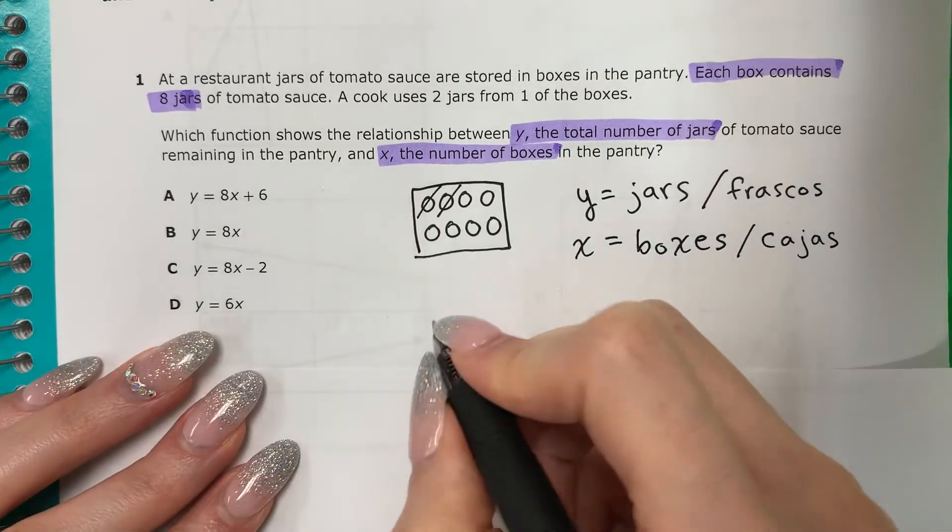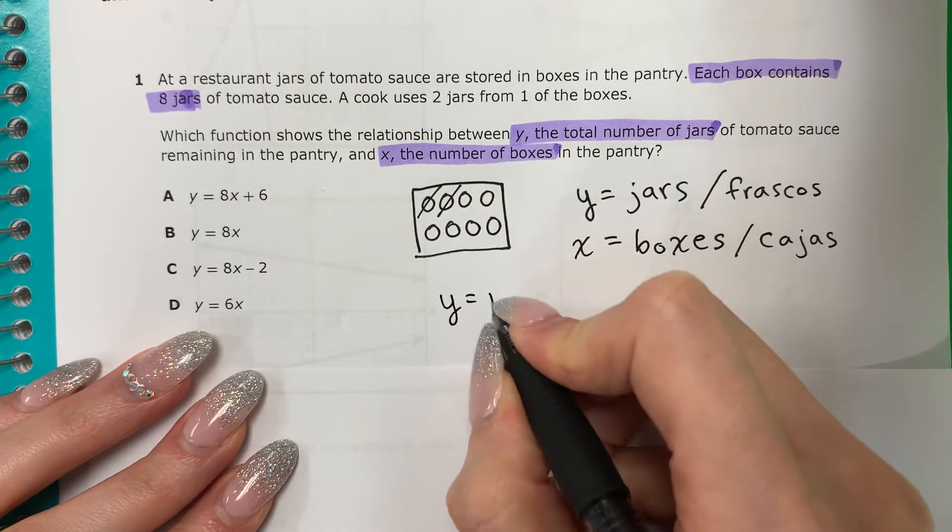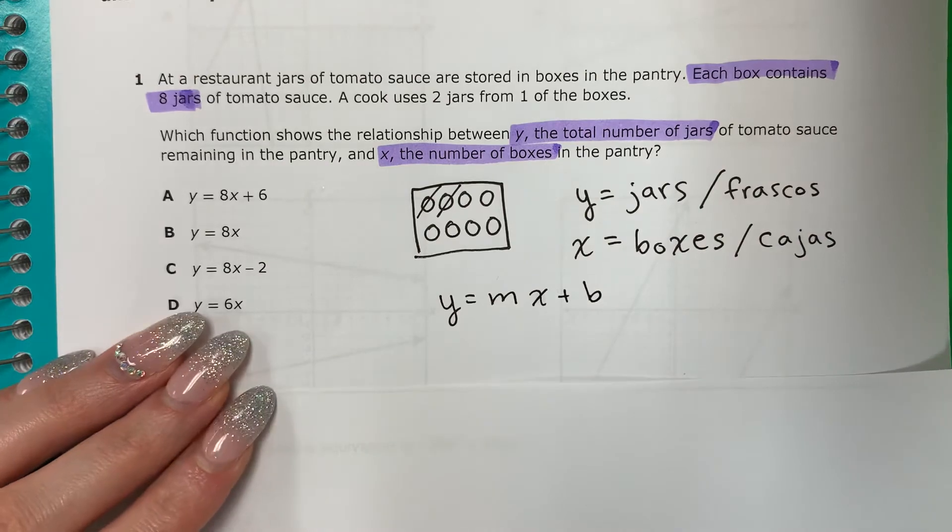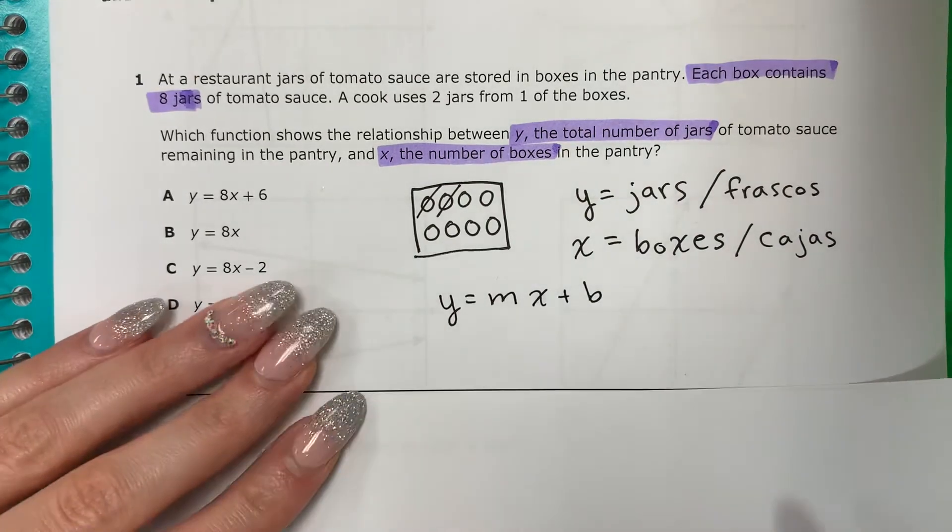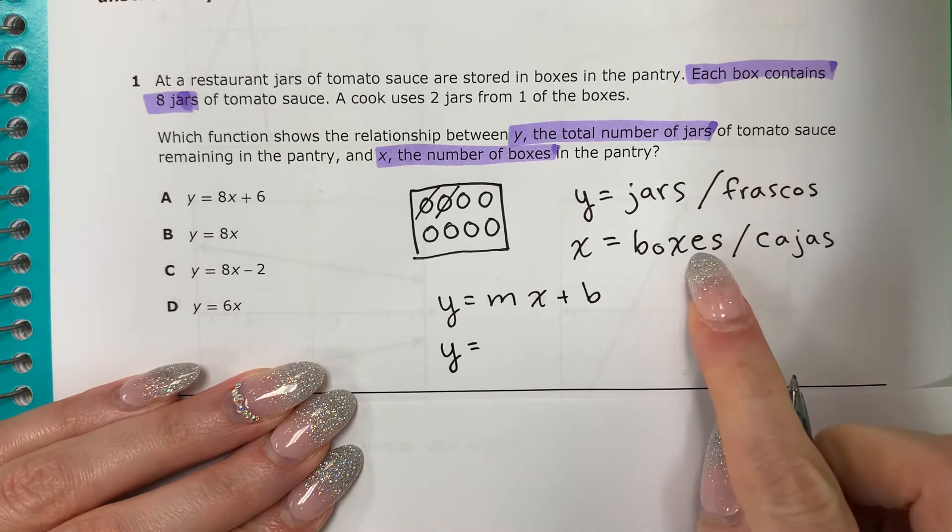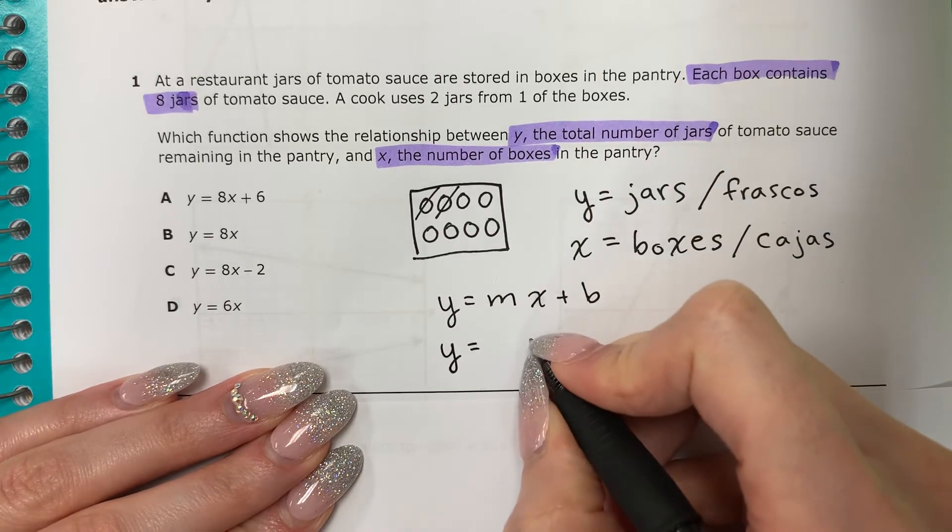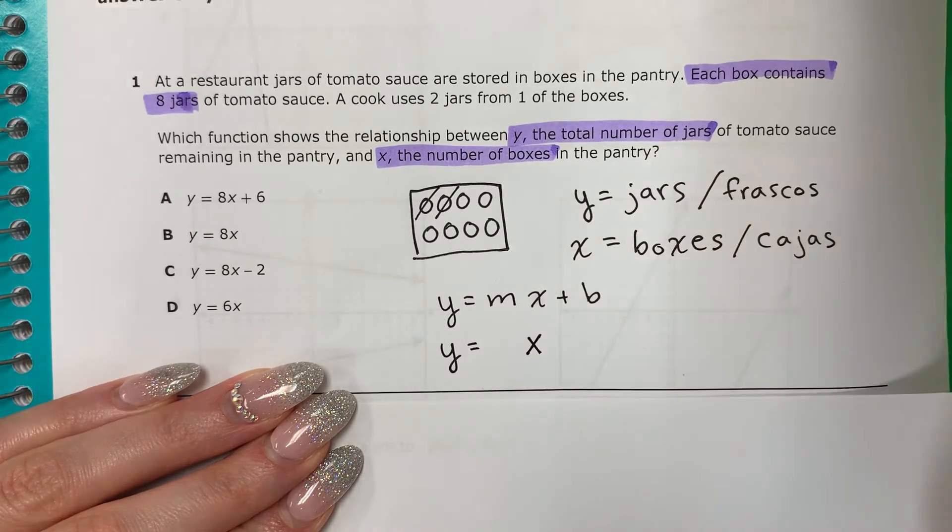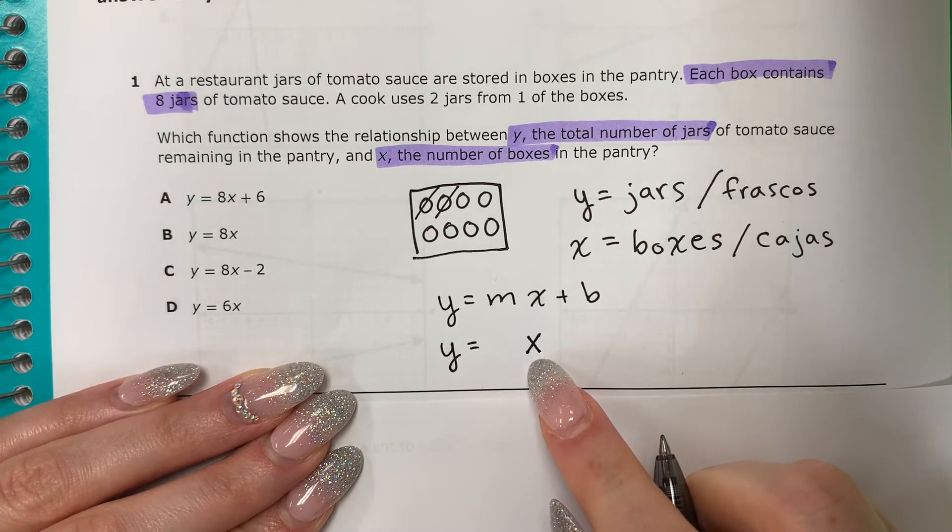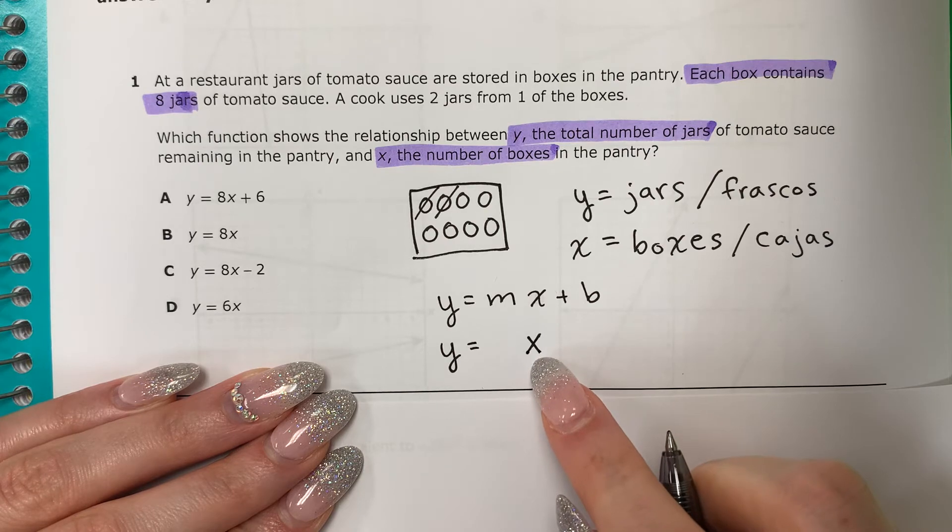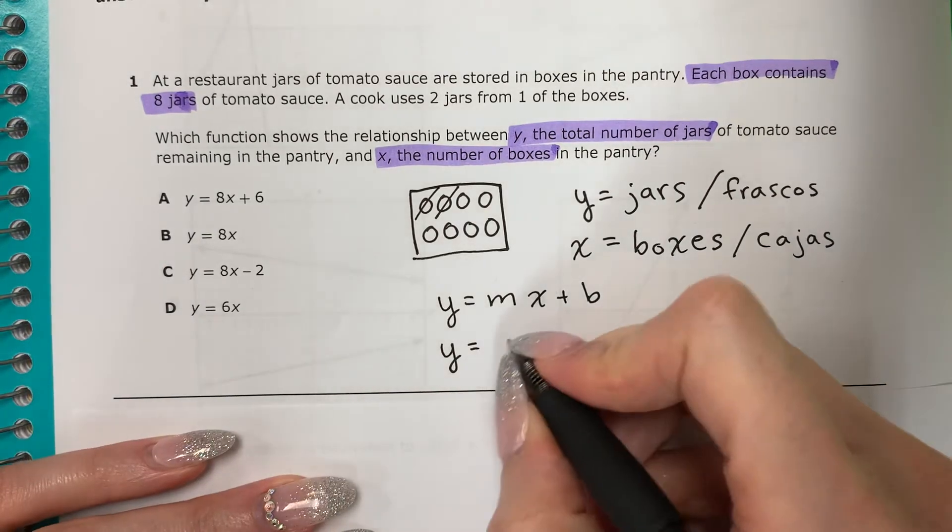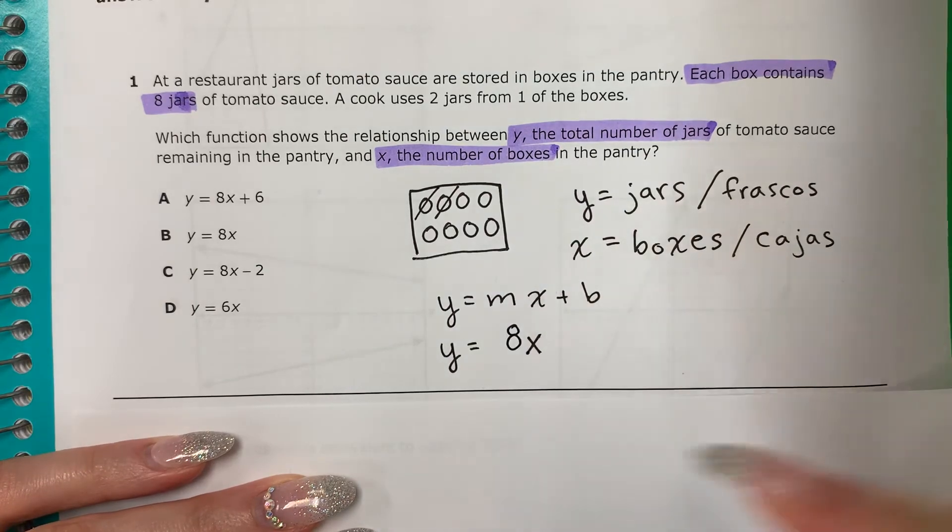You're always going to do Y equals MX plus B. Siempre es Y igual MX más B. Let me explain everything. X is the number of boxes. X es el número de cajas. And each box has 8 jars. Cada caja tiene 8 frascos. So I'm going to put 8 with the X. Voy a poner 8 con el X.